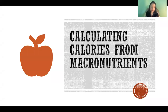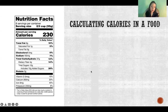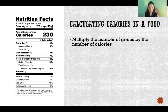Hello, in this video I'm going to talk about how to calculate the calories that you're getting from each macronutrient and how to do the calculation in reverse. So calculating calories, you start by multiplying the number of grams by the number of calories that you get per gram of that macronutrient.